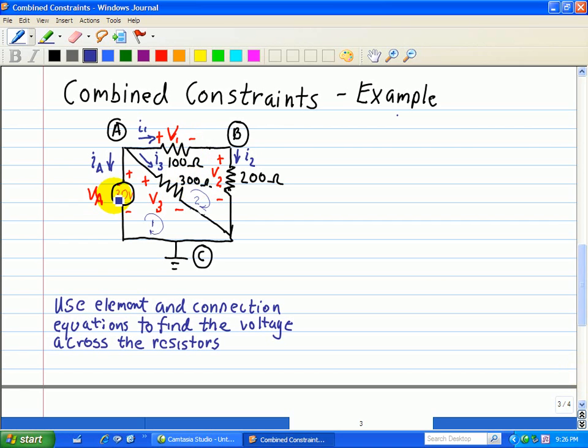Here we have a voltage source of 30 volts. We have a resistor of 100 ohms, another resistor of 200 ohms, and the third resistor of 300 ohms. And we want to use the element and connection equations to find the voltage across each of these resistors.